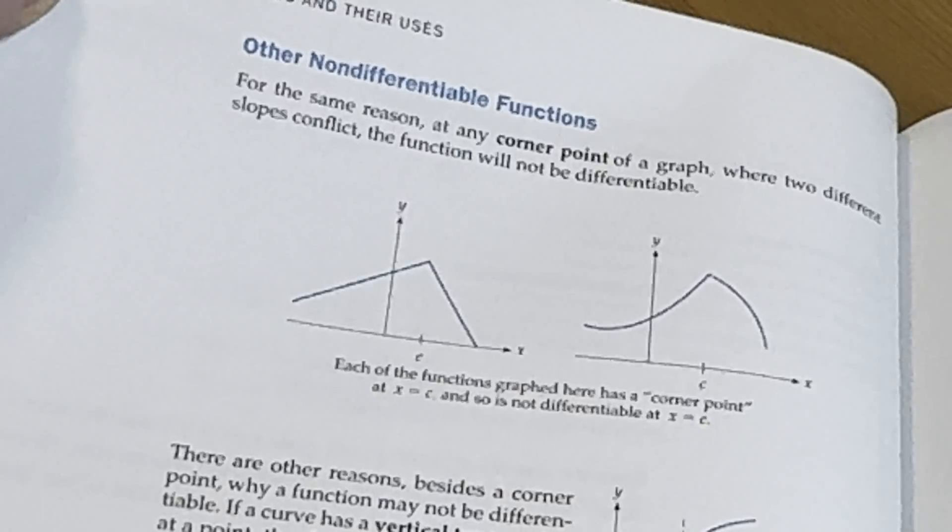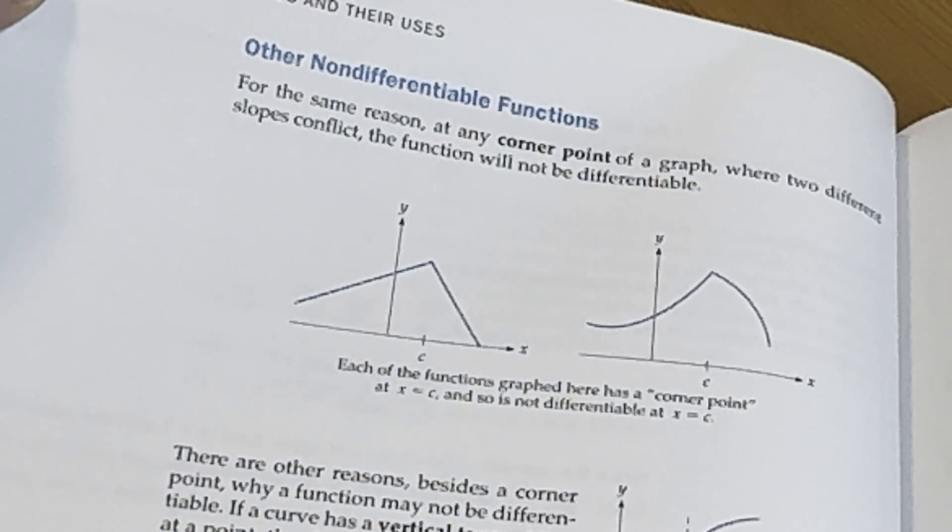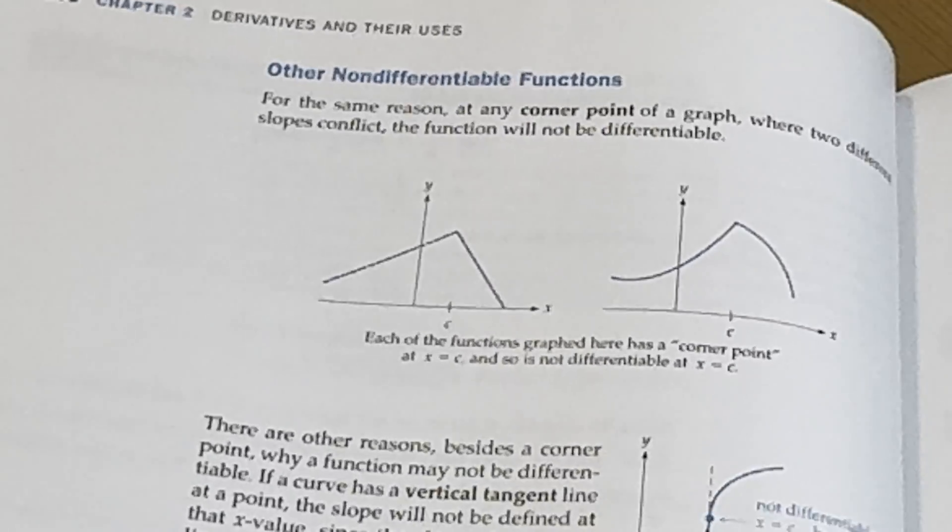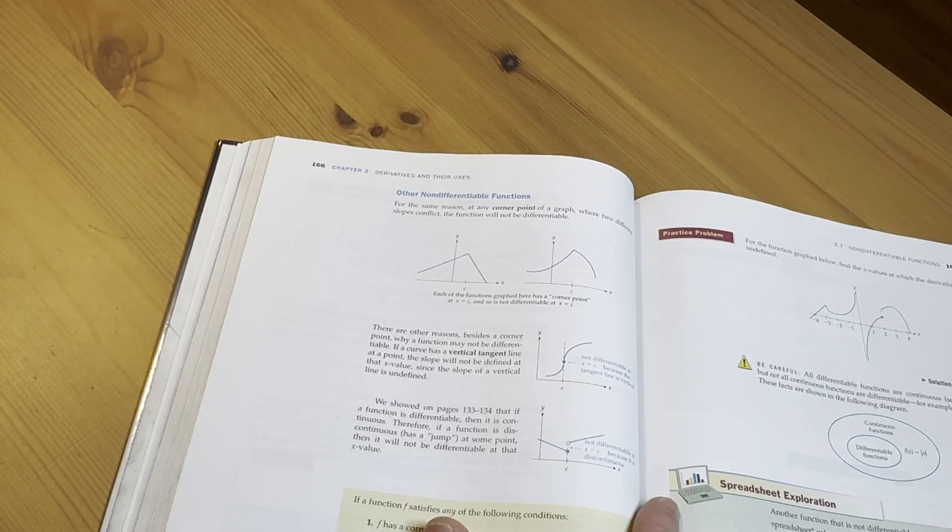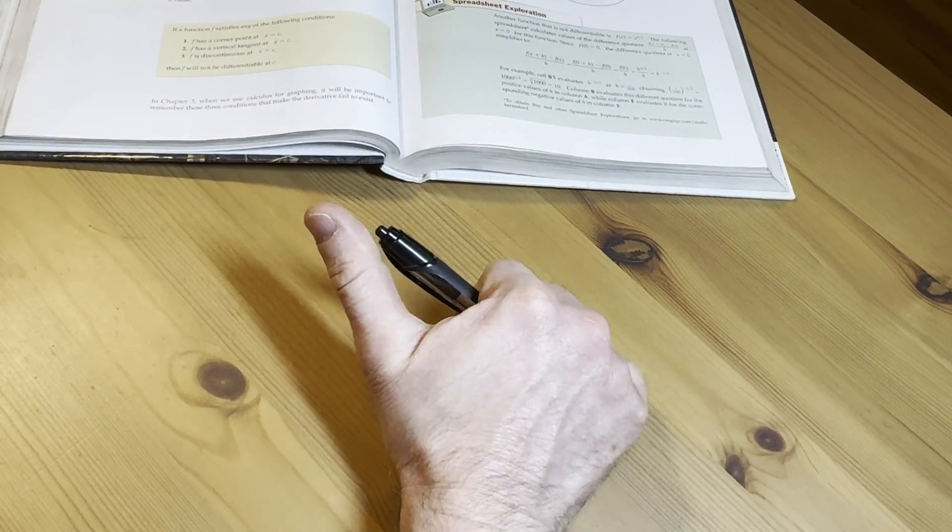The corner point. Yeah, corner point. Another good example would be like, here, I'll show you. Let me just give you an example. Why not? I have a pen here.